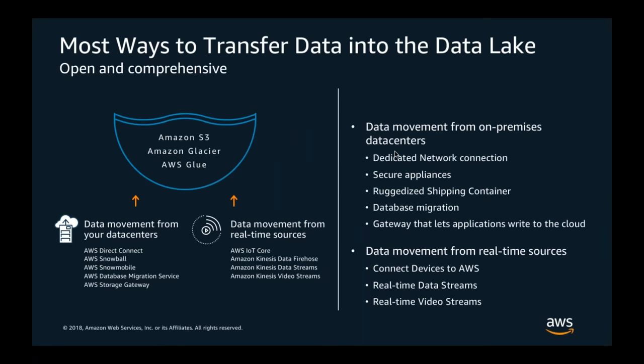Now that we have S3 as centralized storage, how do you collect and feed data into your S3 data lake? You have many options depending on your data source. For connectivity from on-premise data centers, Direct Connect allows you to establish a dedicated network connection to AWS. For migrating data, you can order Snowball — a physical appliance with 80–100 TB of storage — ship it to your data center, copy data, then ship it back.